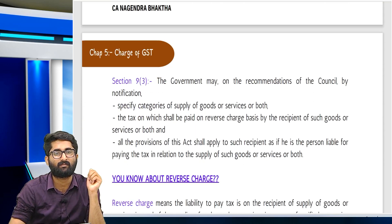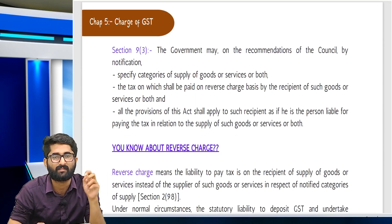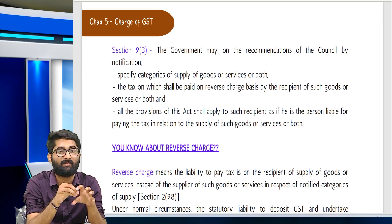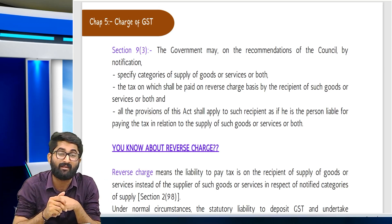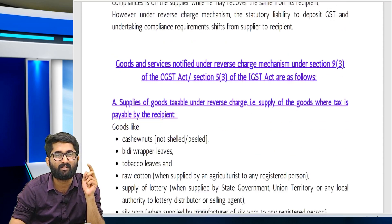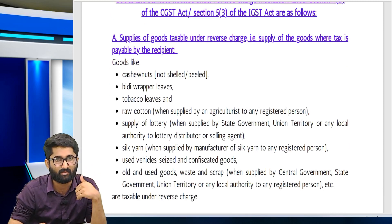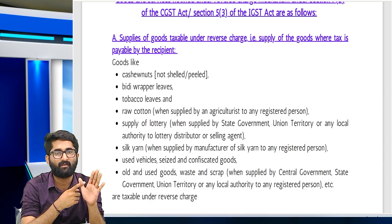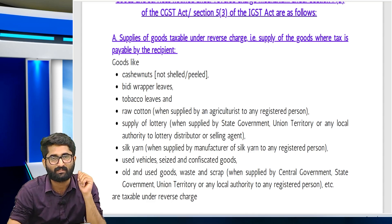Section 9(3): On specified goods and specified category of services, GST is not collected by the supplier but by the recipient who pays directly to the government — this is RCM. The goods on which RCM applies include: betel leaves, cashew nuts, bidi leaves, tobacco, raw cotton, supply of lotteries, silk yarn, used vehicles, old and used goods, and waste.